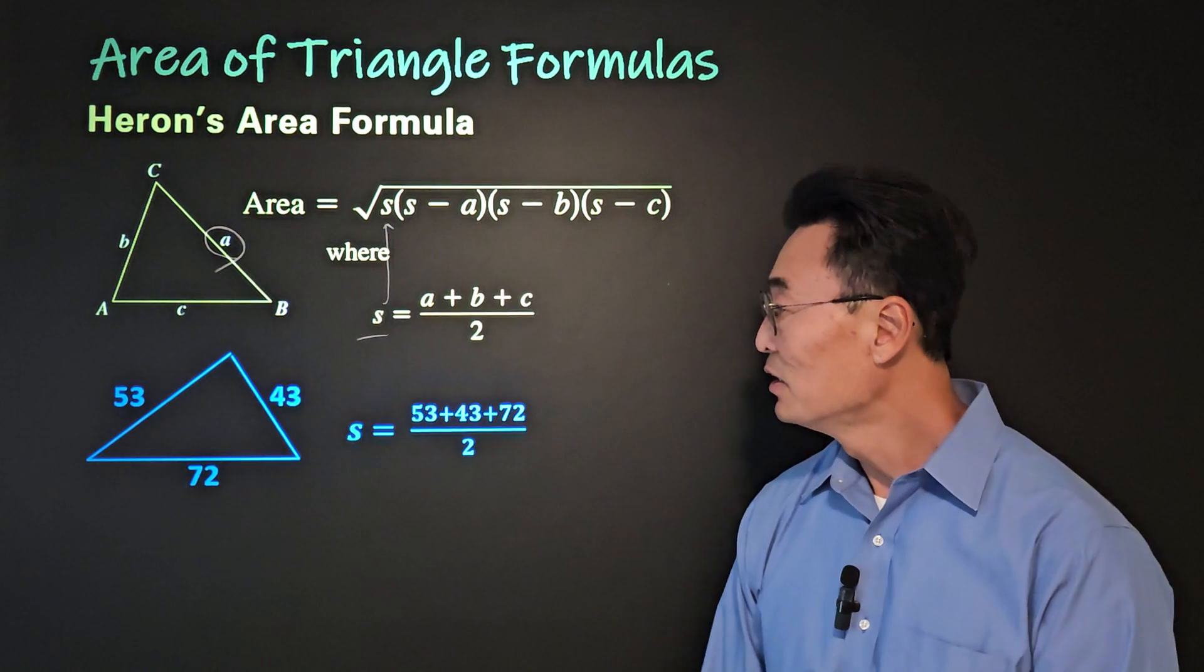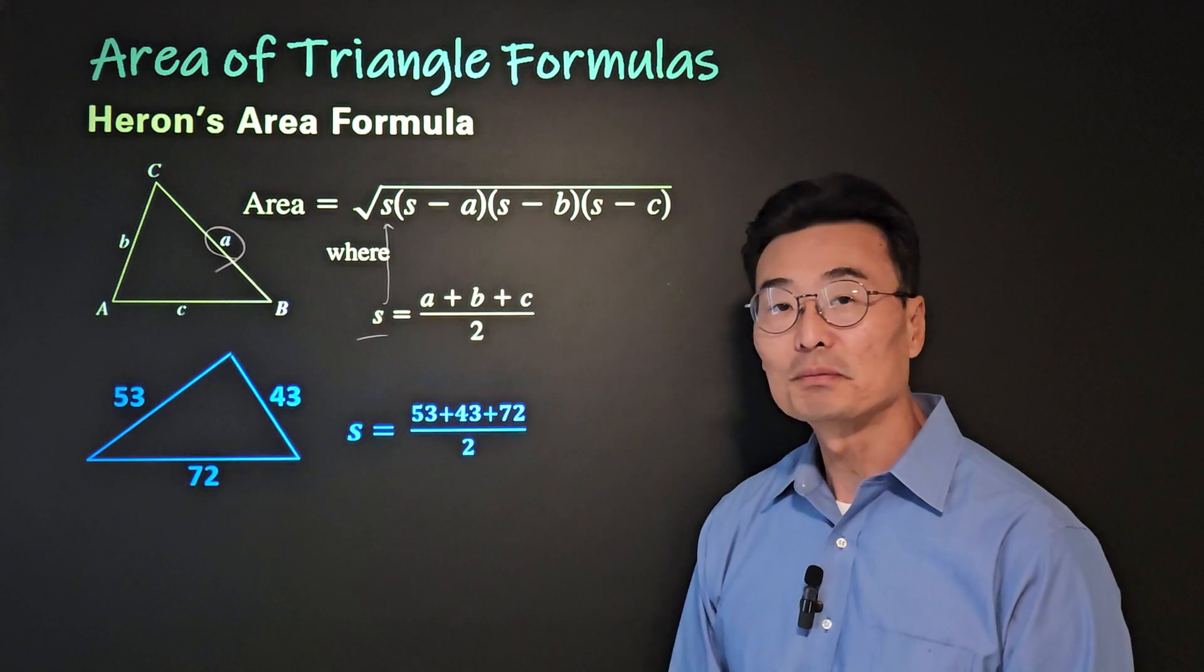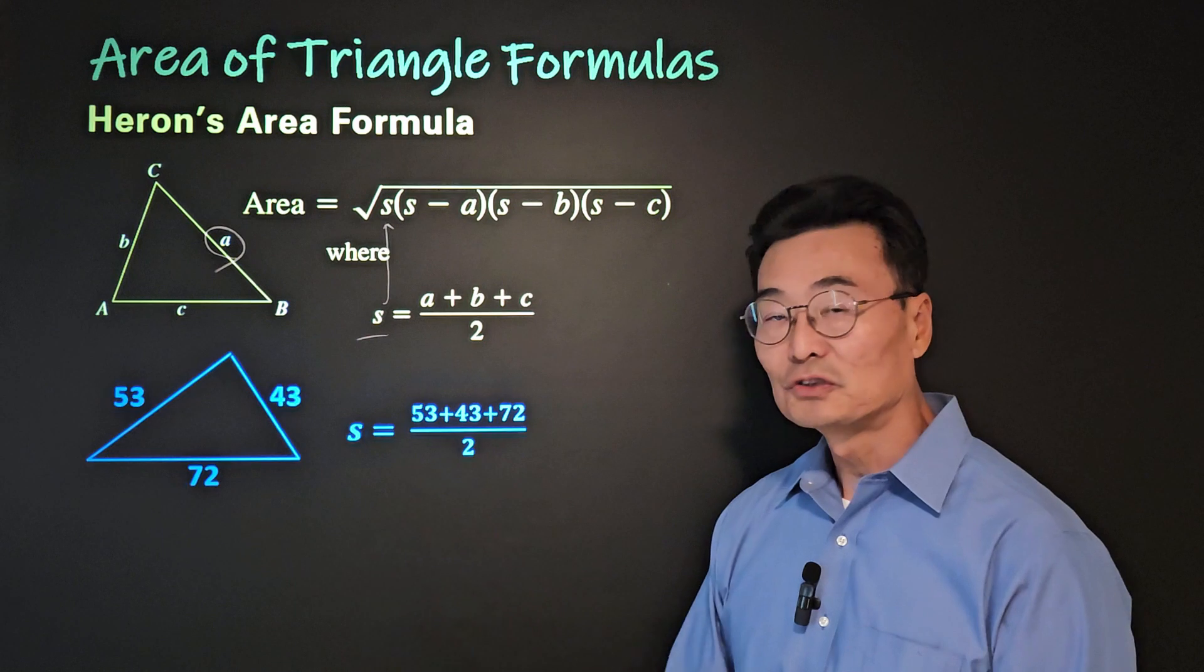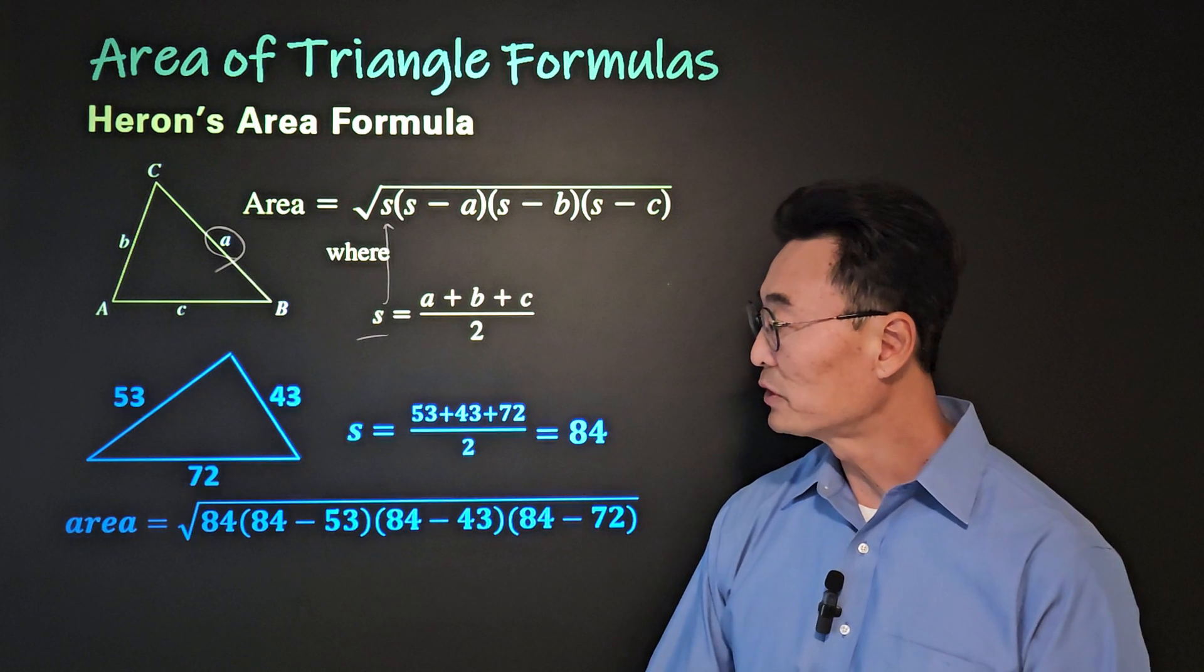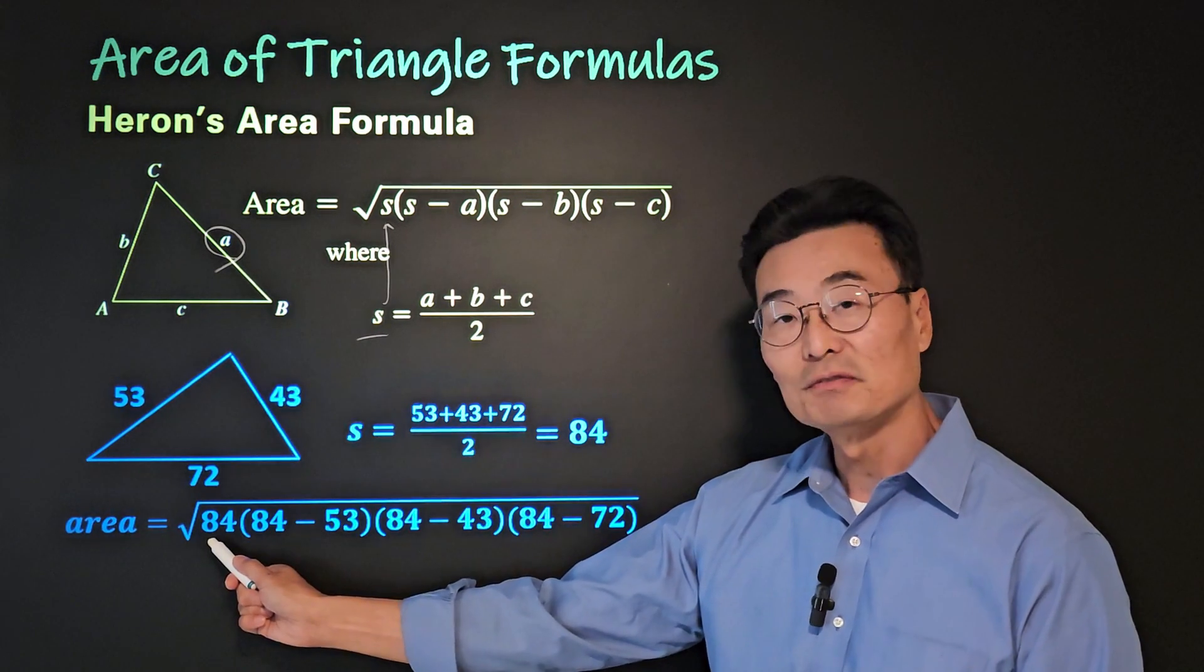So first, we need to find the value of s, where we do 53 plus 43 plus 72, all over 2, which equals 84.